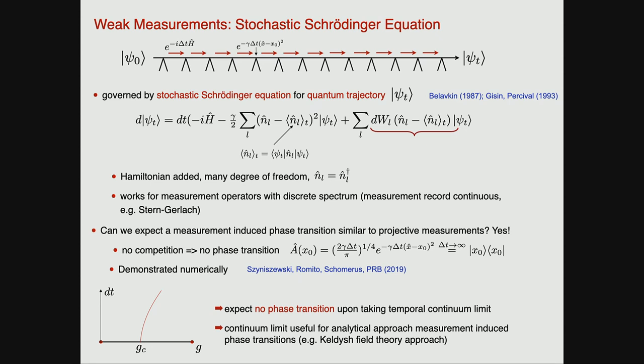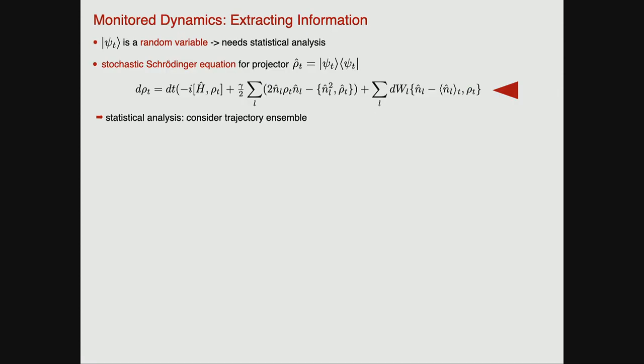Now the question is: do we expect a difference in the universal behavior between strong projective and weak continuous measurements? Do we expect the phase transition that is present for strong projective measurements to be absent for weak continuous measurements? As we already discussed, the details of the measurement process — whether you observe quickly or monitor continuously — should not affect the universal properties of the phase transition. This was also numerically verified.